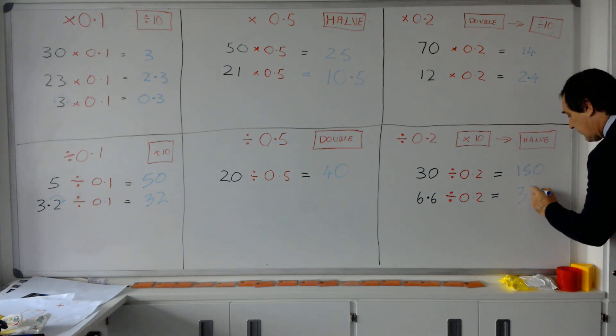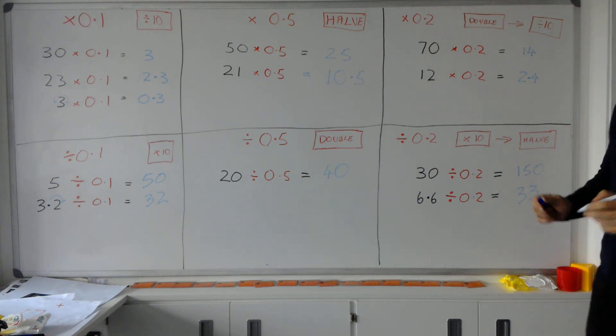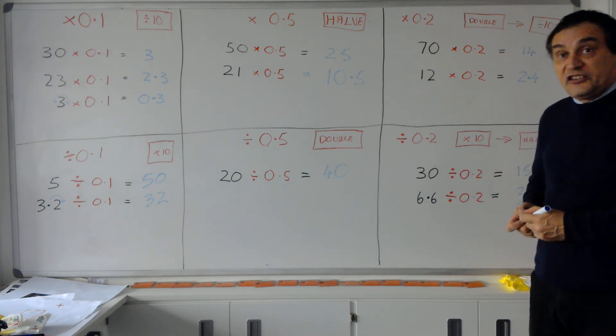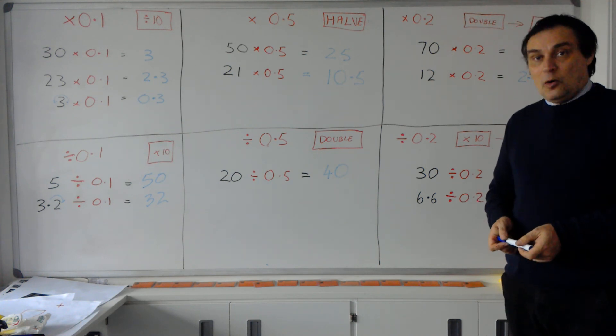So that is how you deal with sums where you're multiplying or dividing numbers by the decimals of 0.1, 0.5, and 0.2.